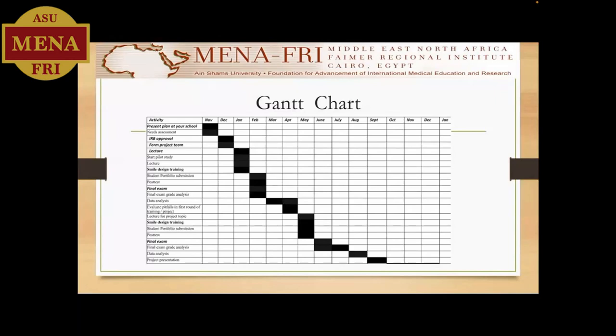I started with IRB approval — the ethics approval from our committee — and we formed a project team consisting of myself as course director and some of my junior staff. All of the junior staff participate in the continuing education program and share in the aesthetic planning course. Digital smile designing is available in continuing education and they had their training before, which was a good starting point. They had also shared in some of the continuing education courses for the department.